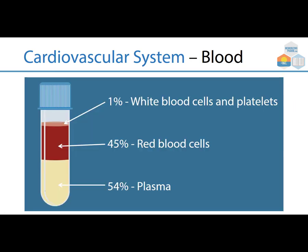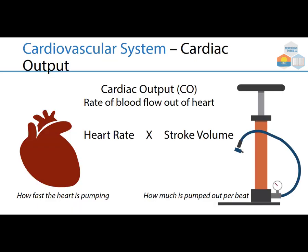What is the blood made of? There are three main components: white blood cells and platelets — white blood cells helping with immune function, platelets helping with injury or bleeding — red blood cells for oxygenation, and plasma. There's one important equation: cardiac output, or the rate of blood flow out of the heart, equals heart rate times stroke volume.